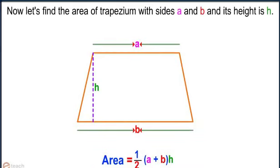Now, let's find the area of a trapezium with sides A and B and its height is H. We know that area of a trapezium equals half into sum of parallel sides into height. Therefore, area equals half into A plus B into H.